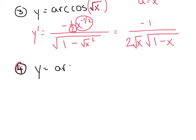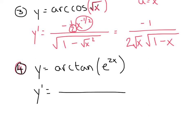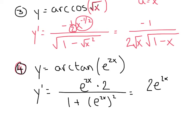y equals arctan(e^(2x)). We get to use our exponential rule here. As I differentiate u = e^(2x), I get 2e^(2x). The derivative is 2e^(2x) over 1 plus (e^(2x))². Squaring e^(2x) gives e^(4x), so the final answer is 2e^(2x) over 1 plus e^(4x).